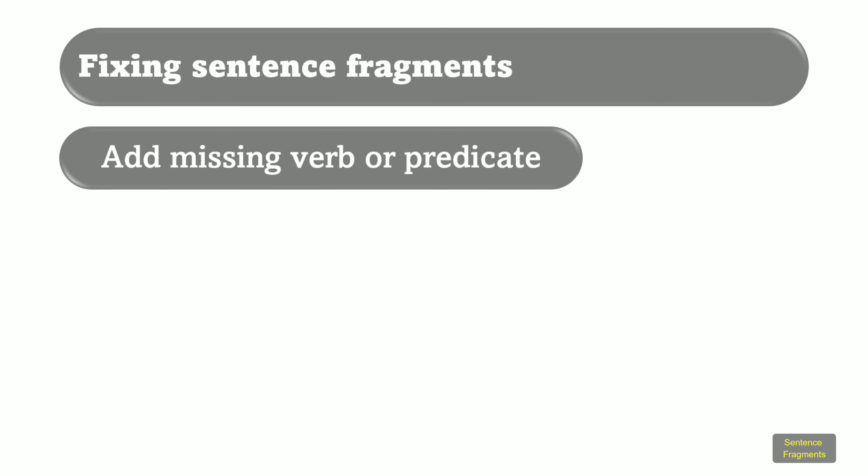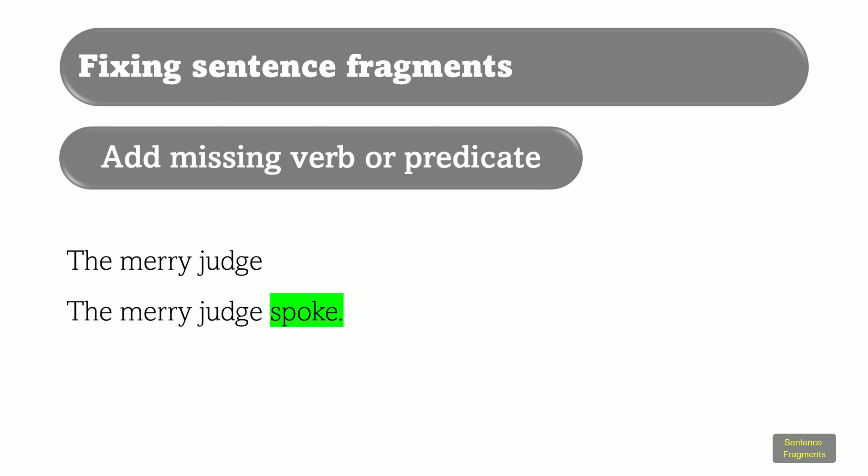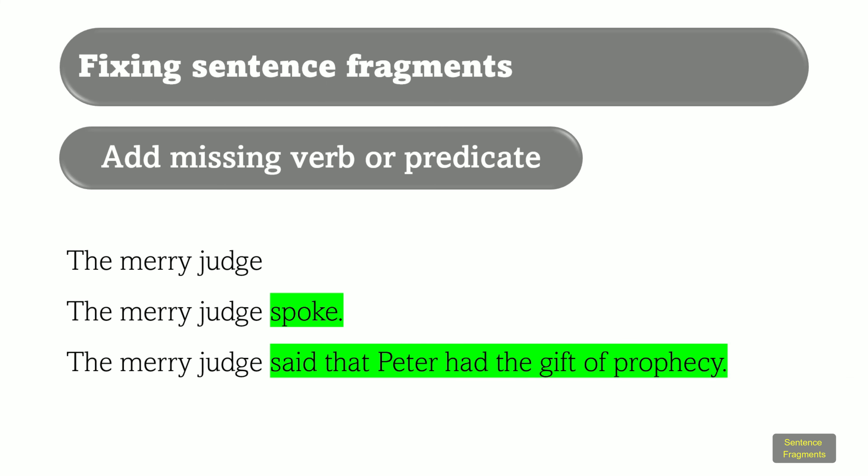If the sentence has no verb and no predicate, add both, or whichever is missing. Look at the example: The Mary judge. For a couple of fixes: The Mary judge spoke — I added a verb. The Mary judge said that Peter had the gift of prophecy — I added a predicate.